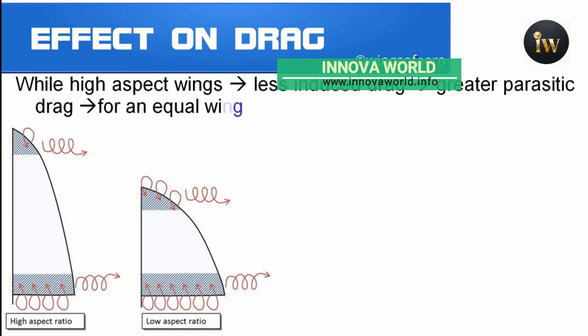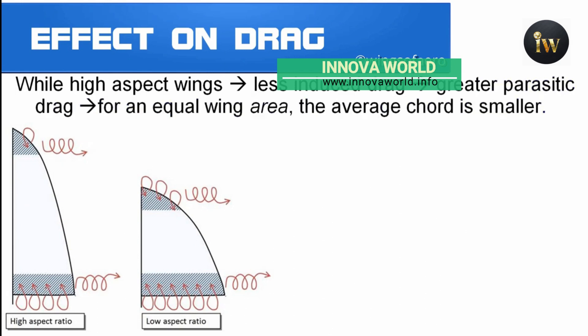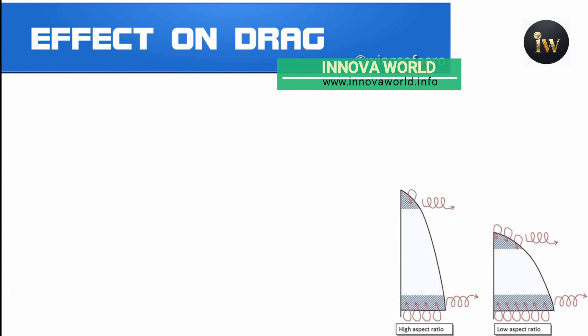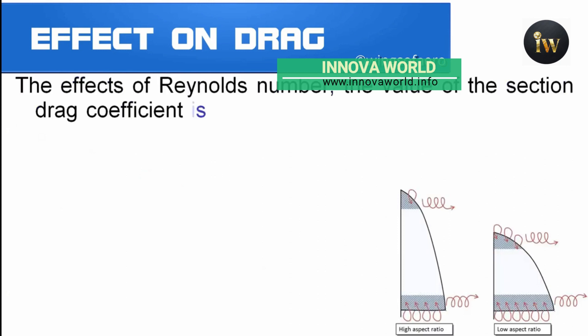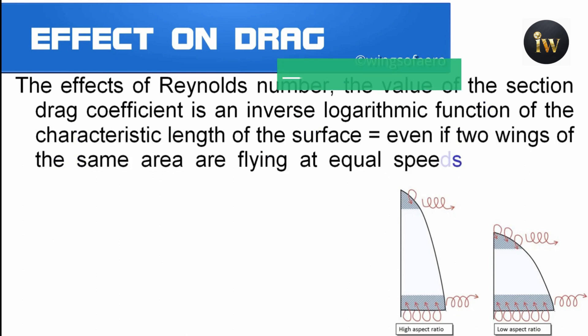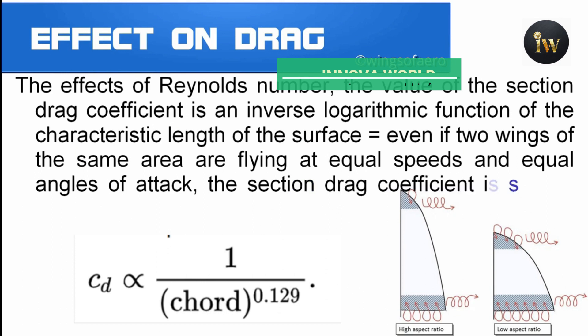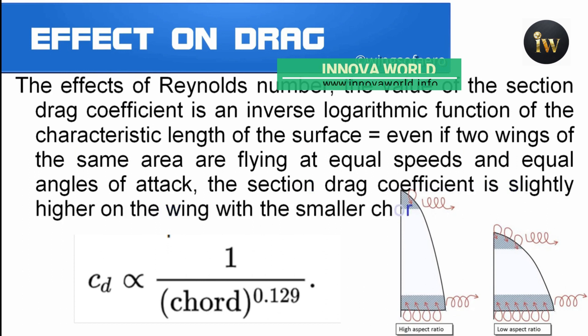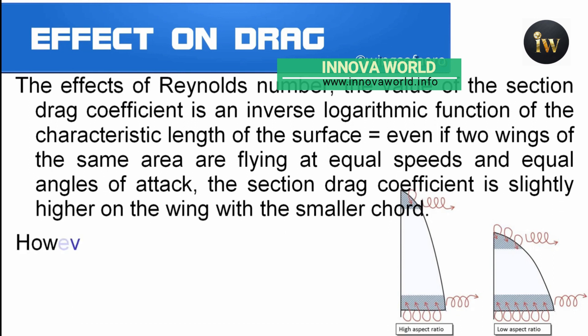Regarding the effect on drag, high aspect ratio wings create less induced drag but have greater parasite drag. This is because for an equal wing area the average chord is smaller. Due to the effects of Reynolds number, the section drag coefficient is an inverse logarithmic function of the characteristic length of the surface, which means that even for two wings of the same area flying at equal speed and angle of attack, the section drag coefficient is slightly higher on the wing with the smaller chord.